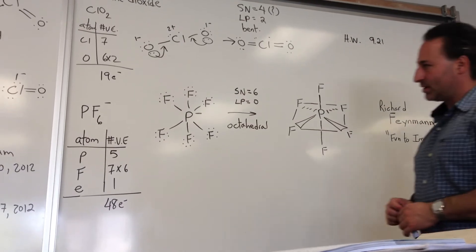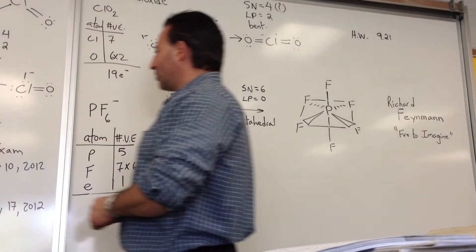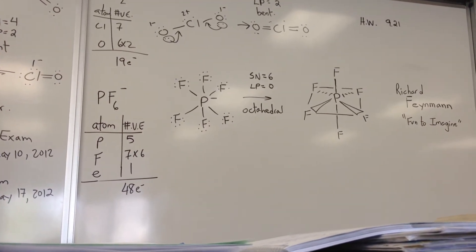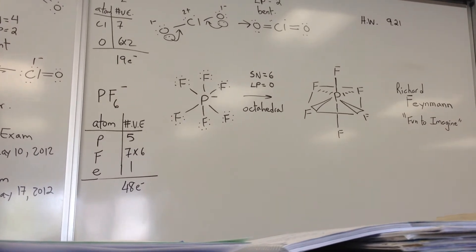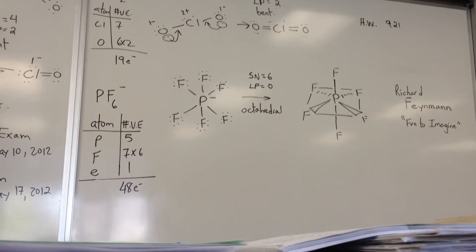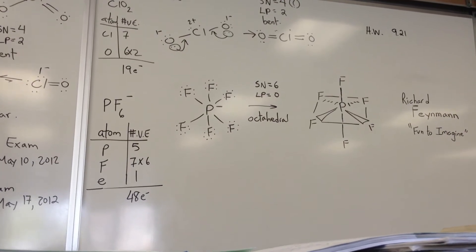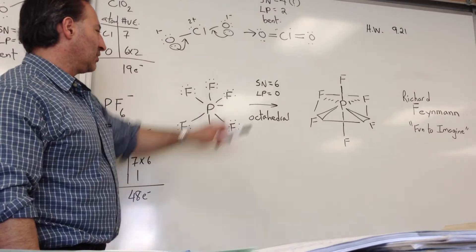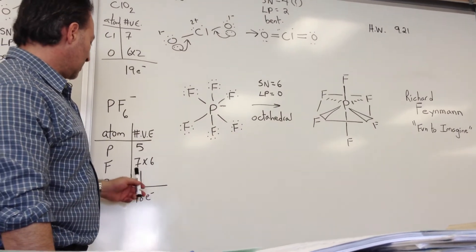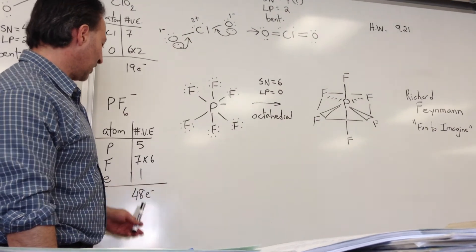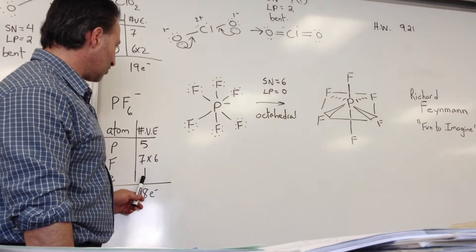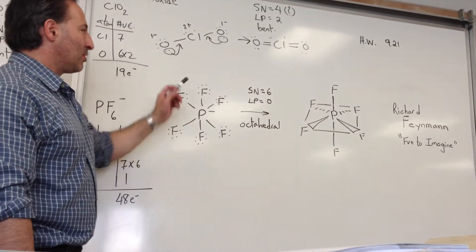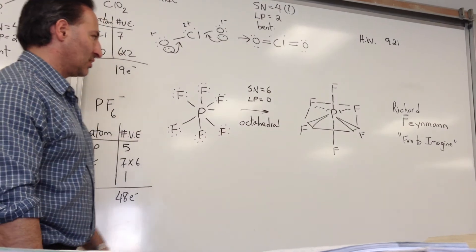The last example I threw in — it wasn't in the homework, but I gave it as an example anyway: PF6 minus, phosphorus hexafluoride anion. Phosphorus has 5 electrons, fluorine has 7, there are 6 fluorine atoms, and there's 1 extra electron for the negative charge, so 48 electrons have to be accounted for. It has a steric number of 6 with zero lone pairs, which suggests an octahedral geometry.